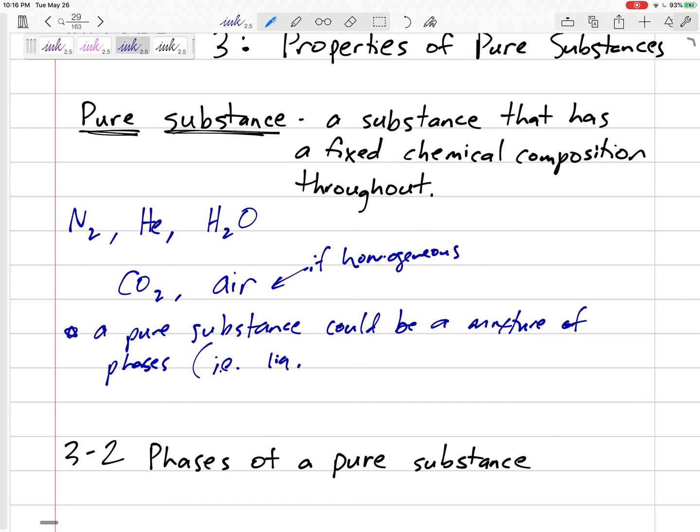For example, a liquid water-vapor mixture could be a pure substance. If water is boiling, or if water is changing from liquid to vapor, we've got a mixture of water that is liquid and vapor. As long as the liquid and vapor have the same chemical composition as it's boiling, it still is a pure substance.